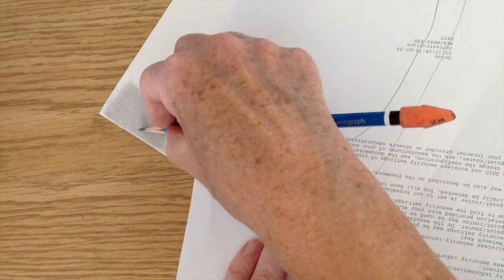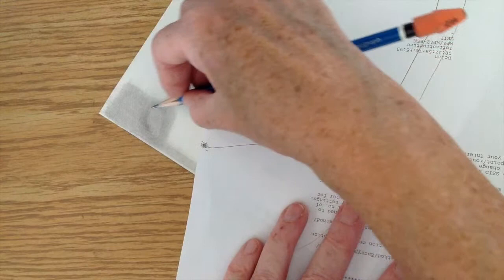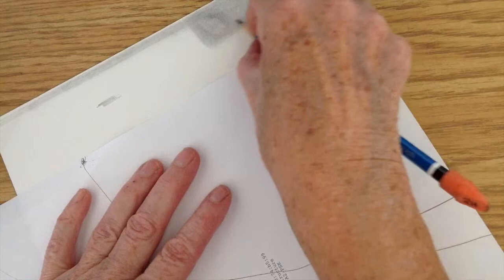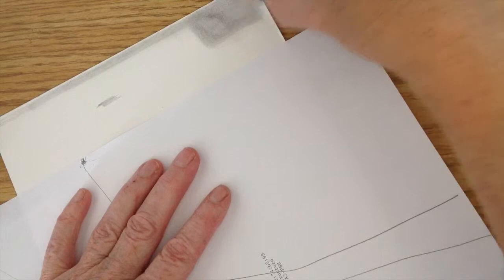Don't be afraid to turn your paper. I turn my paper a lot to help make things flow. So there's a leaf. Now I can start to see another one right there like that, so you can just keep playing with this.